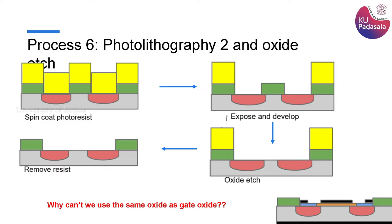Once you do that photolithography process - the spin coating of photoresist, then exposing the wafer through the mask and developing the photoresist - you are free to do the etching process where you can remove the oxide at the middle of the device where the channel was supposed to be formed. That will give you two oxide islands at the ends, the two green oxide islands at the ends, and then at the last you remove the photoresist.